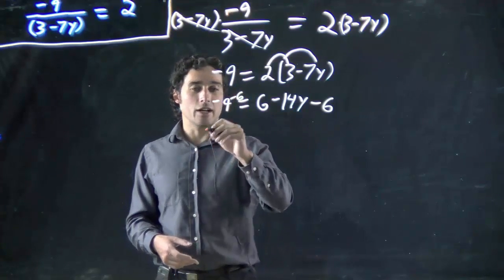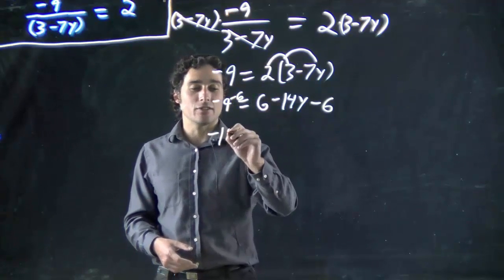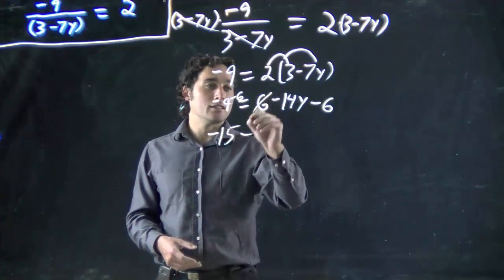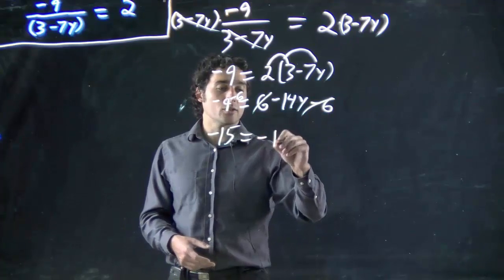And so I've got minus 6 minus, or minus 9 minus 6, which is minus 15. These will cancel. And that's all equal to minus 14y.